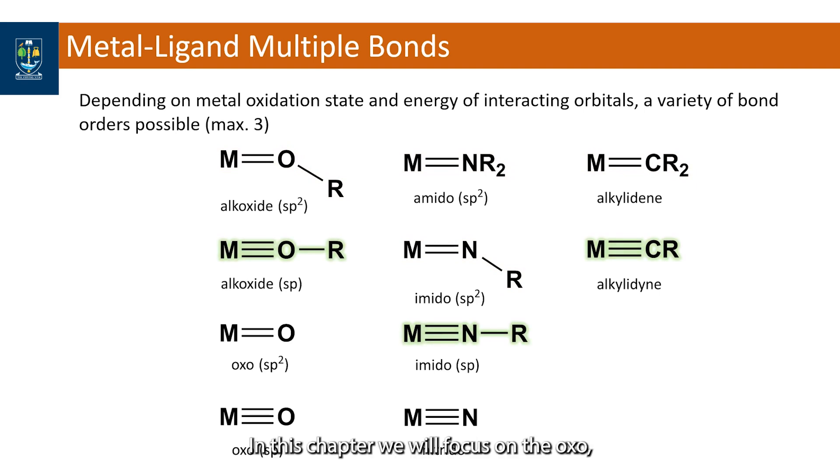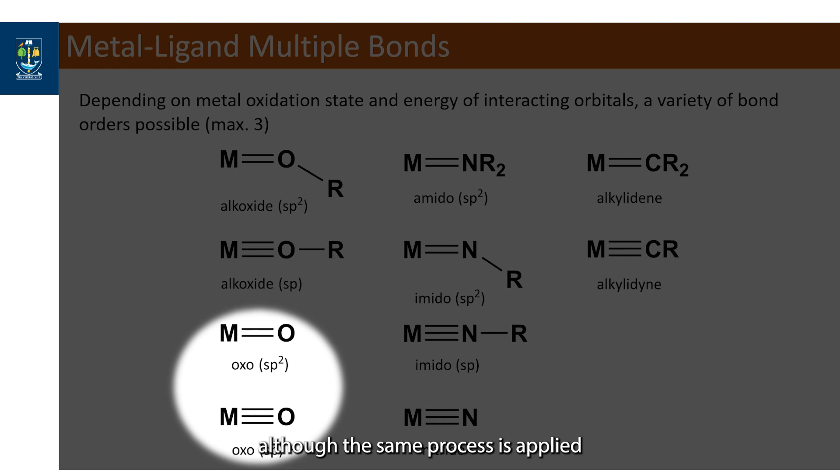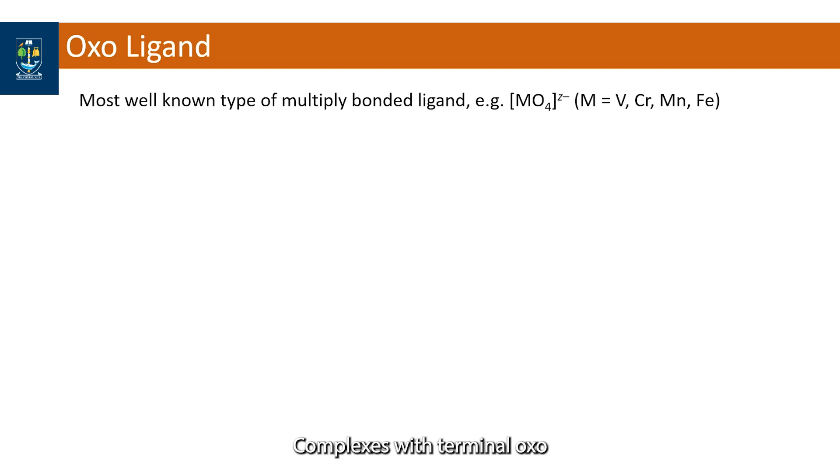In this chapter, we will focus on the oxo, although the same process is applied to any of these ligands. Complexes with terminal oxo ligands are the most common, such as the complex ions ferrate and permanganate.